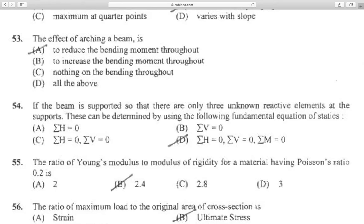Question 54: If the beam is supported so that there are only three unknown reactive elements at the supports, these can be determined by using the following fundamental equations of statics: summation H equals zero (horizontal force equals zero), summation V equals zero (vertical force equals zero), and summation M equals zero (moment equals zero).